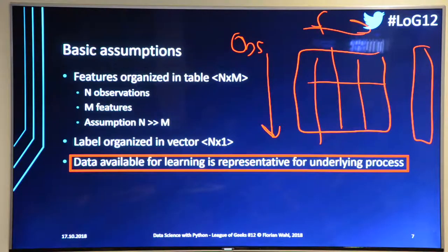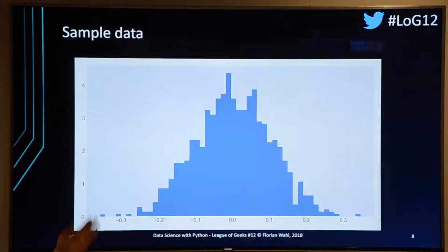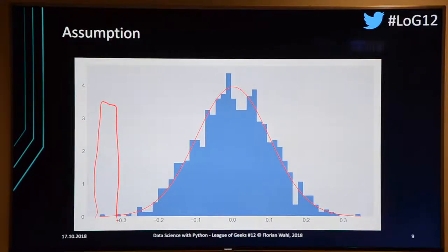The third assumption is that your available data is representative of the underlying process. If you build a model from certain data, you assume it holds when testing as well — the data should stay in the same range. In the real world you can't always guarantee this, but with a large enough sample size, it's fair to assume representativeness.